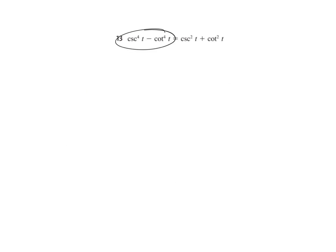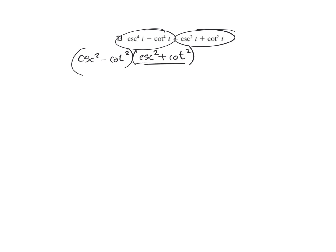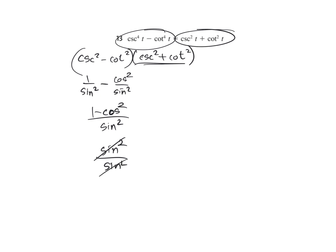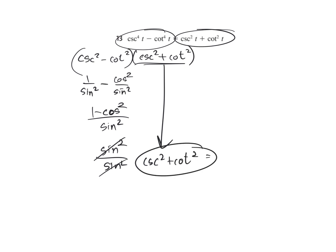I see a difference of squares: cosecant squared minus cotangent squared times cosecant squared plus cotangent squared, which is what we have on the right side. For the left factor, that's 1 over sine squared minus cosine squared over sine squared, giving 1 minus cosine squared all over sine squared. 1 minus cosine squared is sine squared, and sine squared over sine squared is 1. So we're left with cosecant squared plus cotangent squared, which matches the right side.